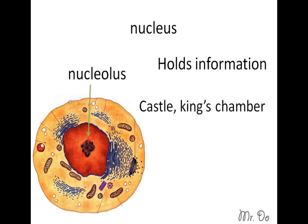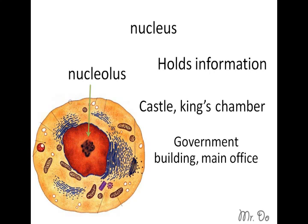So the cell would be like the city, and the castle in the middle is the nucleus. Where all the permissions and requirements are needed — the boss — that would be equivalent to the nucleolus. In a modern day city, the nucleus would be like a government building, and the nucleolus is the equivalent of the main office.